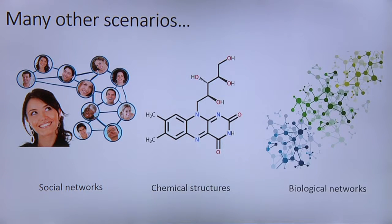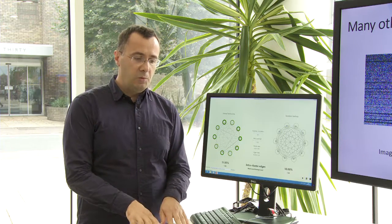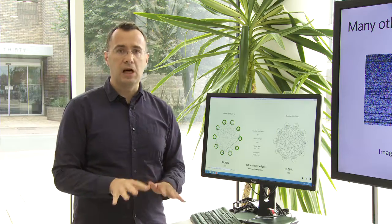That graph could be a social network, may represent a chemical structure or could be a biological network as well as image, as well as program flow graphs and a number of other scenarios. The bottom line is performing these computations in an efficient way and the question is how.